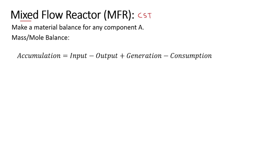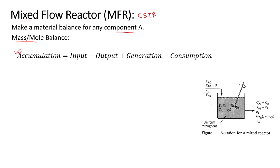Like my previous lectures on batch bioreactors, we will also start from the same position. Suppose you have a component A within the reactor. To do a mass balance or mole balance for component A, you start from the master equation: accumulation of component A equals input of A minus output of A plus generation of A minus consumption of A.